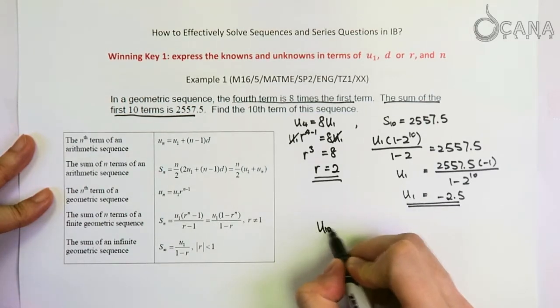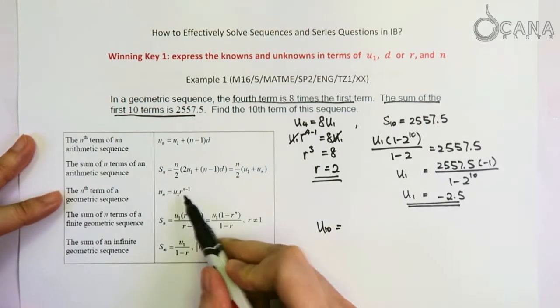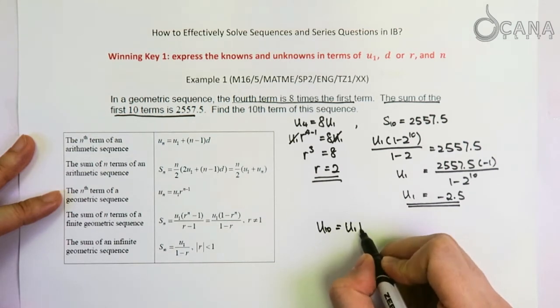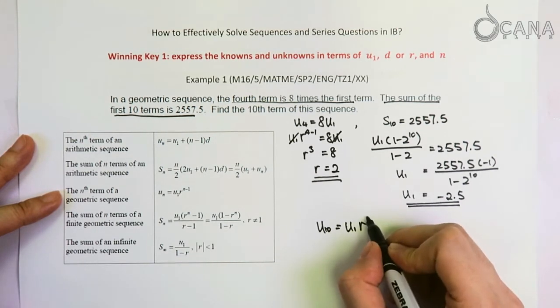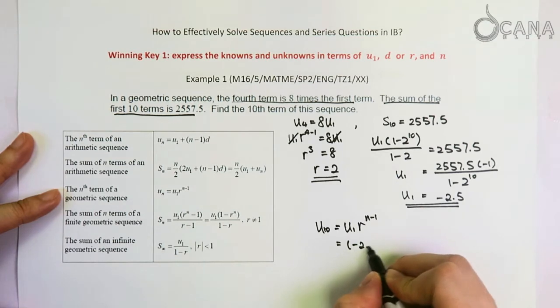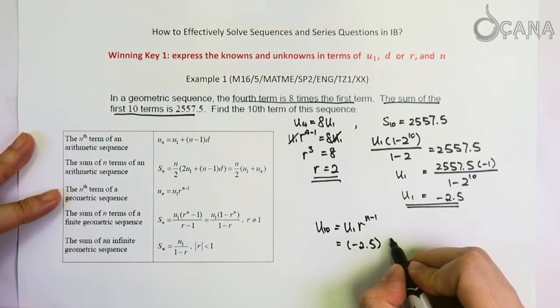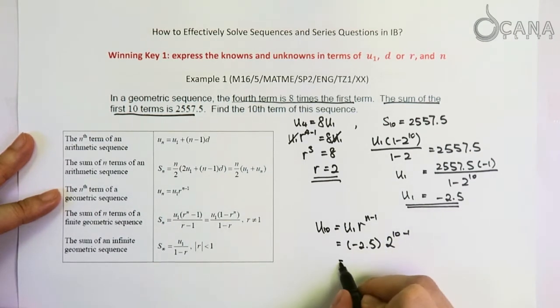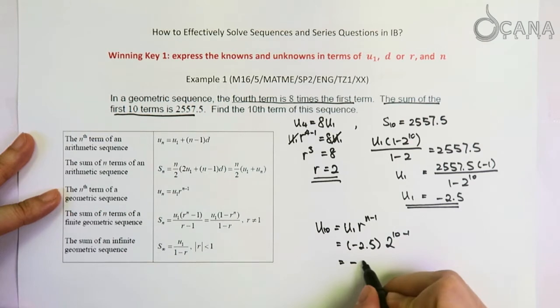Let's try to continue to solve this question to find the tenth term in this sequence. The tenth term is U10, which by the formula is expressed by U1 and the common ratio to the power of N minus 1. Now we can plug numbers in. U1 is negative 2.5 and the common ratio is 2. N is 10.